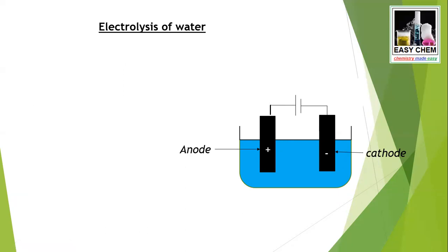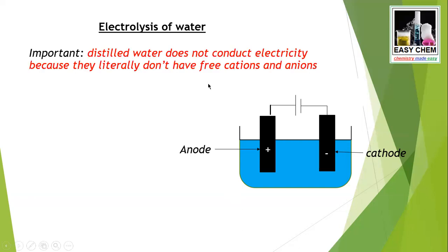There is a very important point: if you take distilled water — just H₂O — it is not able to pass electricity. Distilled water cannot pass electricity because it doesn't have free cations and anions. Electrolysis happens because of the movement of free cations and anions present in an aqueous solution or molten substance. In a distilled water sample there are no cations or anions, so this apparatus would give no result.